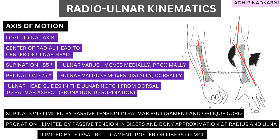Today we are going to cover the radio-ulnar kinematics. The major movement here is supination and pronation. We will understand the axis, what movement happens, and also the structures that limit this movement. The axis of motion is a longitudinal axis going from the head of the ulna to the head of the radius. The movement that happens is supination and pronation, where the radius moves within the osteoligamentous structure, and distally the radius moves over the ulna.